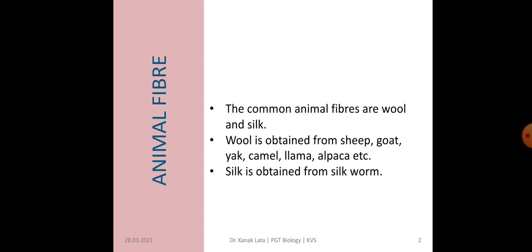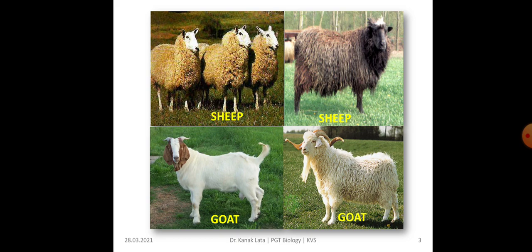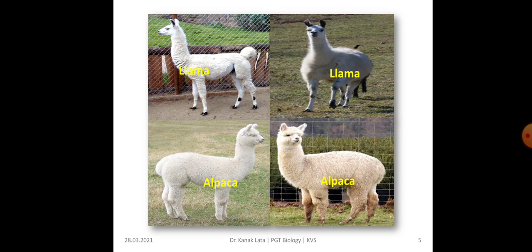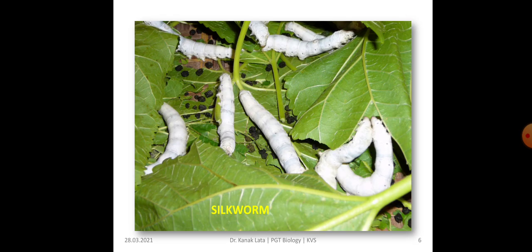Common animal fibers are wool and silk. We all know that wool is obtained from different animals like sheep, goat, yak, camel, llama, alpaca, etc. Silk is obtained from silkworm. Here are pictures of sheep and goat — you may see how hairs are present on their body. This is yak and camel, and this is llama and alpaca. All these animals produce wool. This silkworm is responsible for producing the silk fiber, which is also an animal fiber.